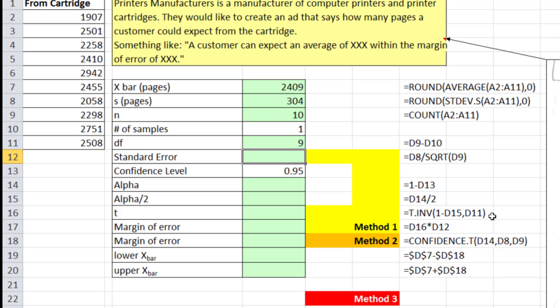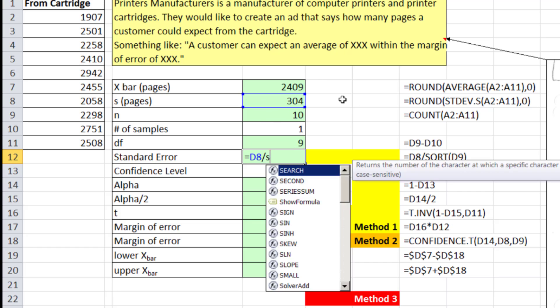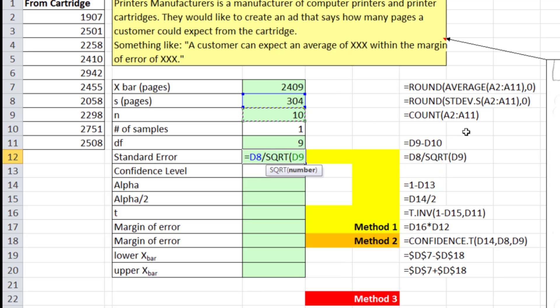We can calculate our standard error using our s. So we'll take our s divided by square root of our n. Confidence level, 0.95. Alpha, that's the population mean is not in our confidence interval. And alpha divided by 2, we need that for the upper end. Now, we're going to calculate t directly, and then use our formula for calculating margin of error.